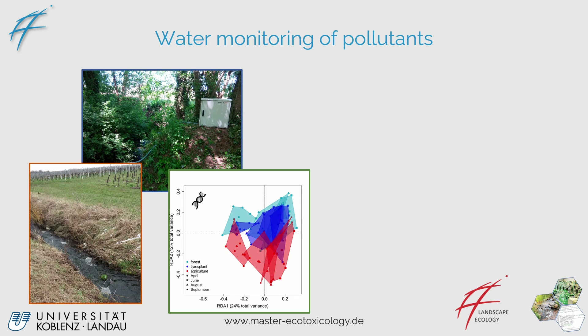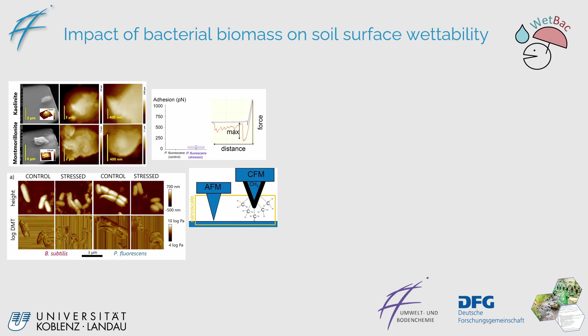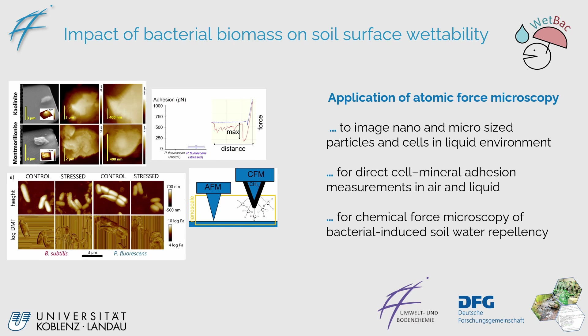There are also large-scale monitoring programs of pollutants — for instance, a Germany-wide monitoring of particular agricultural streams using so-called event samplers. Because we know that pollutants can alter ecosystem functions and their associated microorganisms, that was assessed comprehensively for the entirety of Germany. There is also very nano- or micro-scale work, such as examining the impact of bacterial biomass on soil surface wettability — small-scale experiments that are nonetheless very important for understanding processes at the micro scale.